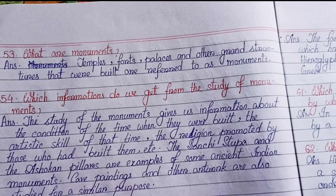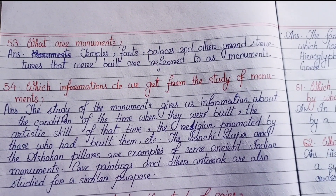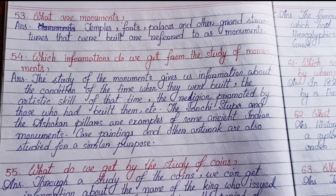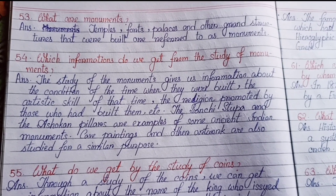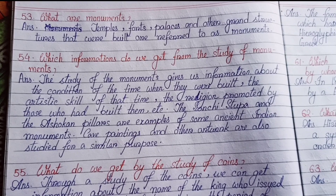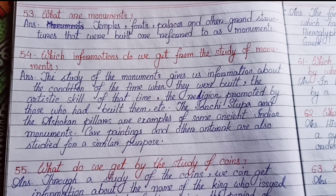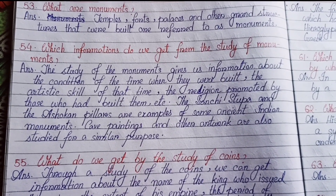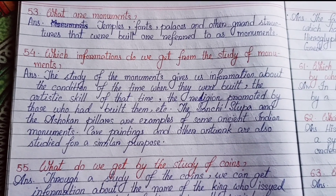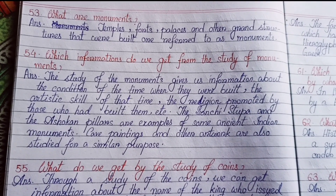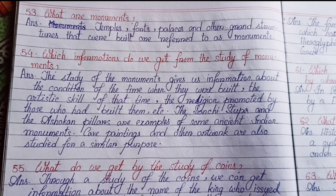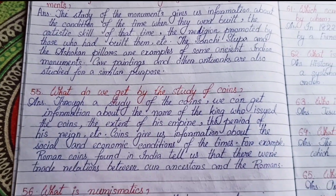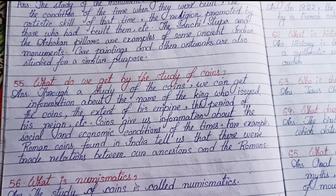Number fifty-three: What are monuments? Temples, forts, palaces and other grand structures that were built are referred to as monuments. Number fifty-four: Which information do we get from the study of monuments? The study of monuments gives us information about the conditions of the time when they were built, the artistic skill of that time, the religion promoted by those who built them, etc. The Sanchi Stupa and the Ashokan Pillar are examples of some ancient Indian monuments. Cave paintings and other artworks are also studied for a similar purpose.